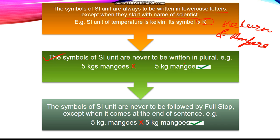The symbols of SI unit are never to be written in plural. Like 5 kgs mango. It's wrong. It should be 5 kg mango. And you don't put a full stop after any SI unit except when they are at the end of the sentence. So this is correct.